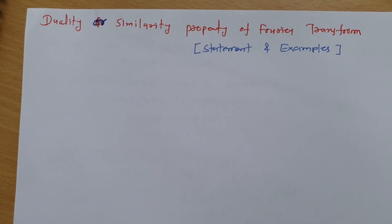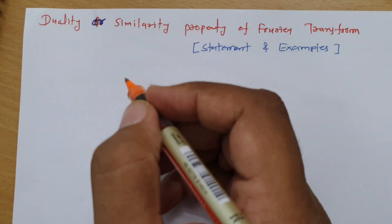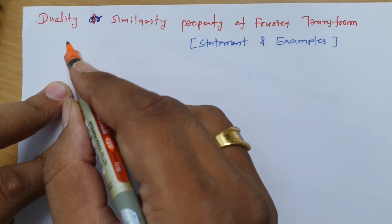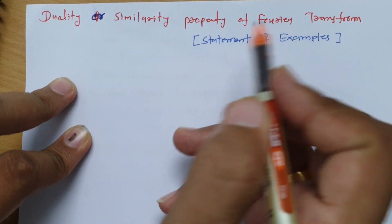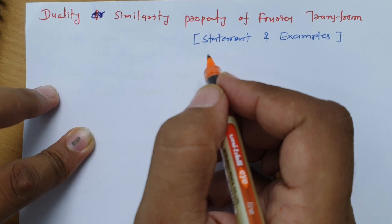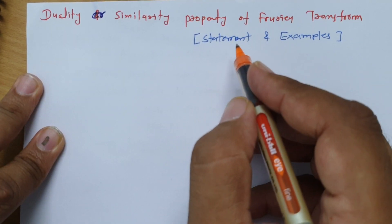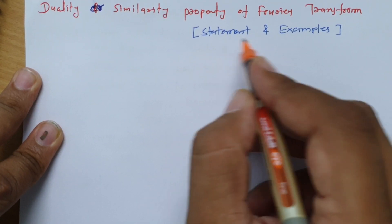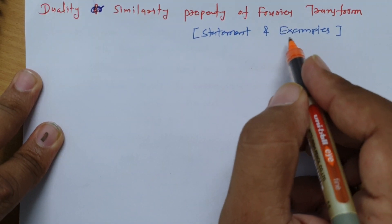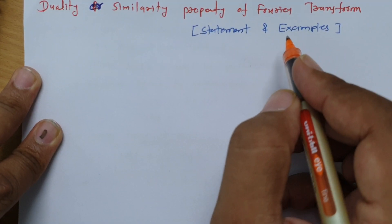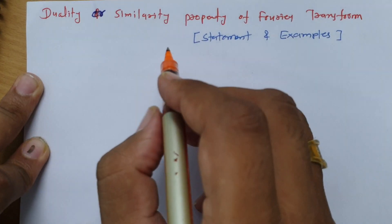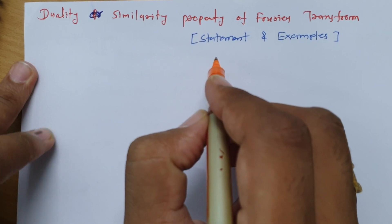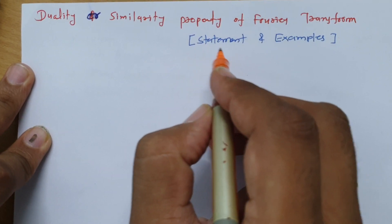Welcome to the signal and system lecture series. In this session, I'll be explaining a very interesting property of Fourier transform, that is the duality or similarity property. This is my session outline where first I'll explain the statement, and then we will see some examples so it will be more clear how to apply this duality property.